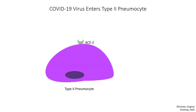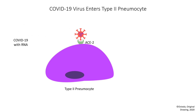Here I have a type 2 pneumocyte with ACE2 on its surface. ACE2 is the receptor for the COVID-19 virus. Here I have a virus, and here the virus has attached to the receptor. Once it's attached, it can then enter the cell and release its RNA inside the cell.